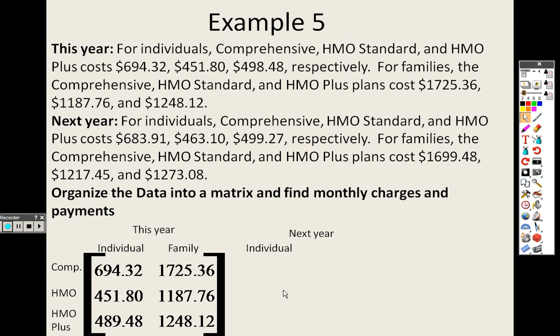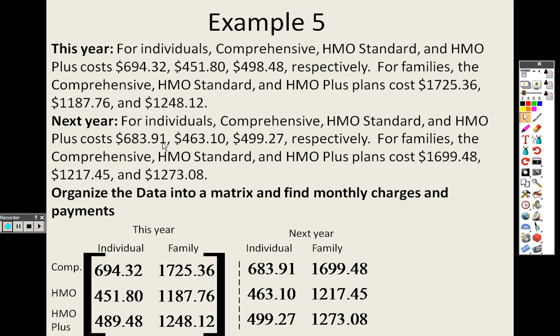The next one is the following year for the individual, and the following year for comprehensive, right? 683, 683. 463, 463 for HMO individual. Kind of like follow it across, right? HMO crosses with individual, so HMO individual goes in that point. And anyway, there are my two matrices.